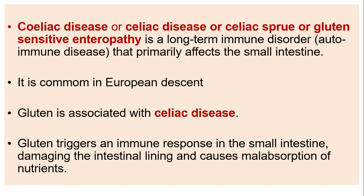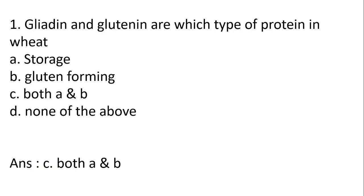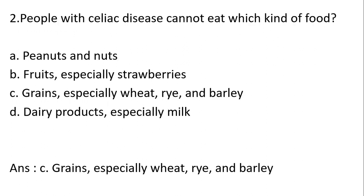MCQ 1: Gliadin and glutenin are which type of protein in wheat? Options: storage, gluten-forming, both A and B, none of the above. Answer: C, both A and B.